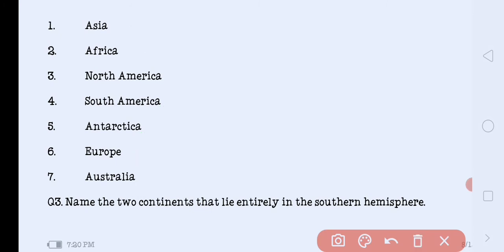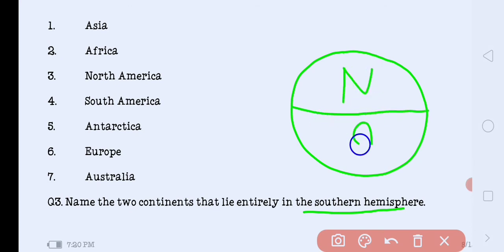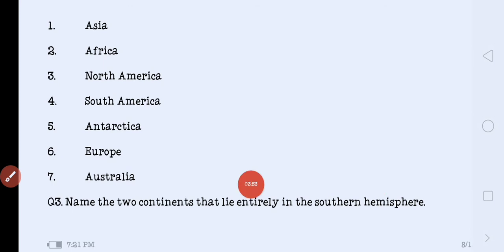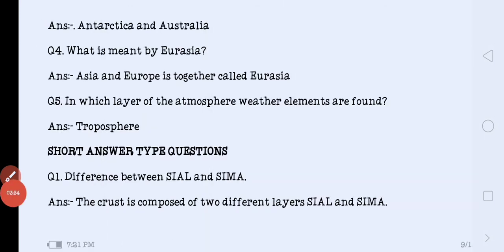Next question is name the two continents that lie entirely in the southern hemisphere. Southern hemisphere means the earth is divided into two parts. This is the equator, this is the northern part, this is the southern part. Which two continents lie entirely in the southern part? The correct answer is Antarctica and Australia.